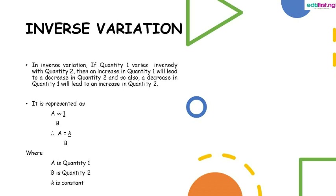Now moving on to inverse variation, which is slightly different from direct variation. In direct variation, an increase in quantity one leads to an increase in quantity two. But in inverse variation, an increase in quantity one leads to a decrease in quantity two, and vice versa. It is represented as: a varies inversely with b, therefore a equals k over b, where k is the constant.